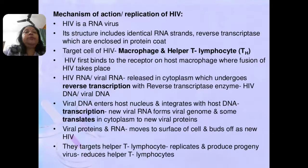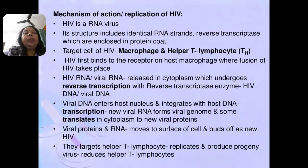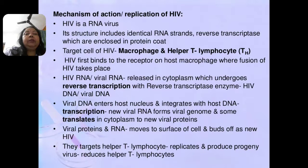Now, the mechanism of action, or replication, of HIV: HIV is an RNA virus with an RNA genome, and its structure includes identical RNA strands. With the help of the reverse transcriptase enzyme enclosed in the protein coat, the target cells of HIV in humans are macrophages or T-helper lymphocytes, known as TH cells. When HIV enters the body, it first binds to the host macrophage, where fusion of HIV takes place. The HIV RNA, or viral RNA, is released into the cytoplasm, undergoes reverse transcription, and with the help of reverse transcriptase, HIV DNA or viral DNA is formed. This viral DNA then enters the host nucleus and integrates with the host DNA.